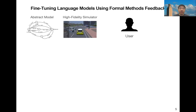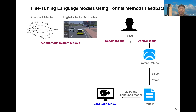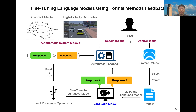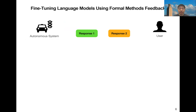Here is our method. We have an abstract model for the system, and then the user will provide specifications and control tasks. The user queries the language model to generate multiple responses to the same task, and we use automated feedback to compare and give preference to the outputs of the language model. We then feed this output into the direct preference optimization algorithm to fine-tune the language model.